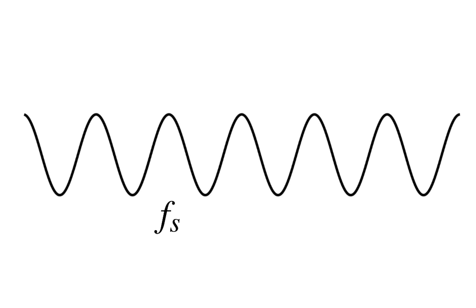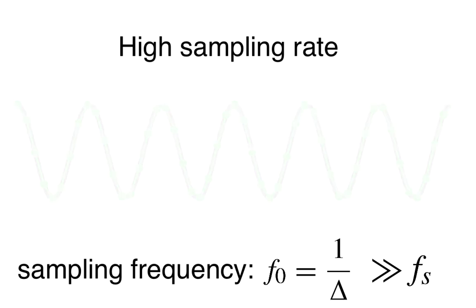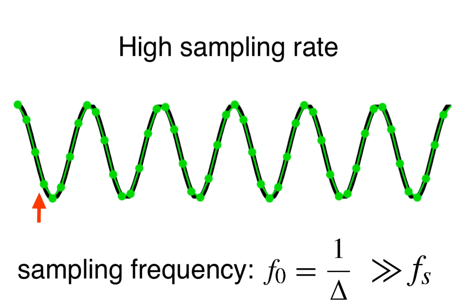In the first case, we purchase a very expensive piece of equipment that can sample the true signal at a high rate. Said another way, our sampling frequency F0 is much, much greater than the frequency of our underlying sinusoid. In this case, we observe the true brain signal with many samples, and given these samples, we can accurately reconstruct the underlying data.